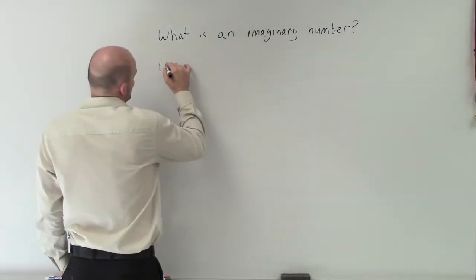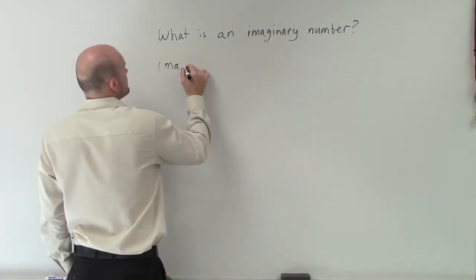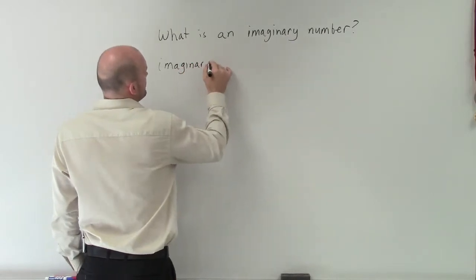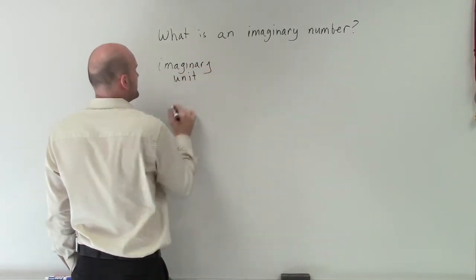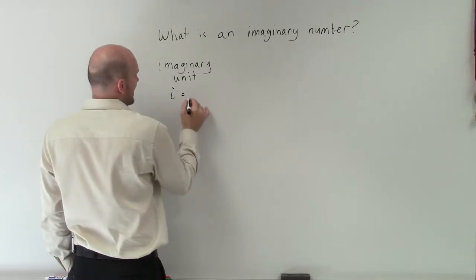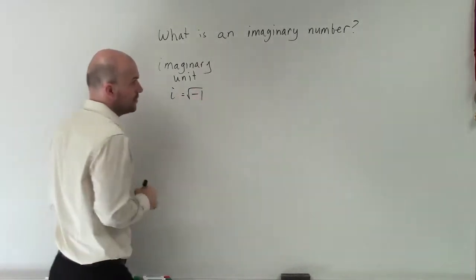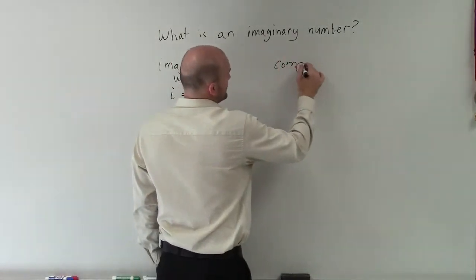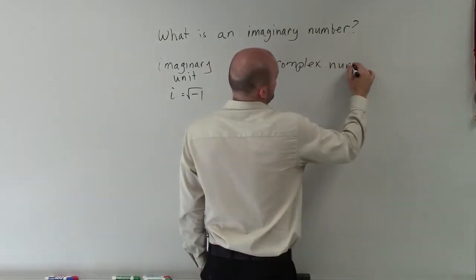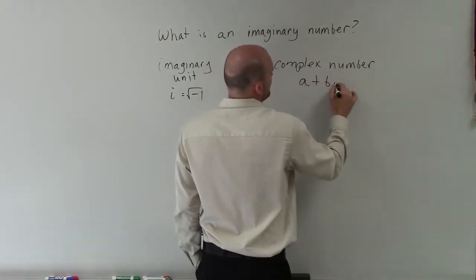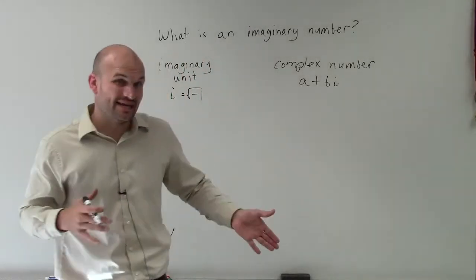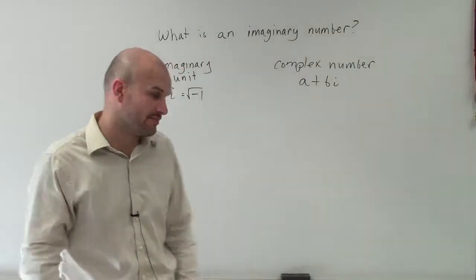So we have an imaginary unit. We know that imaginary unit we represent with i, which equals the square root of negative 1. And then we set a complex number in the form of a plus bi, where a and b are both going to be real numbers.